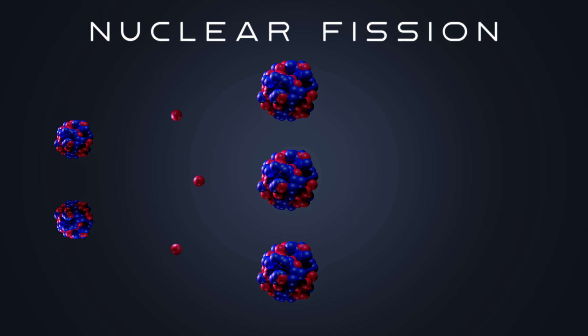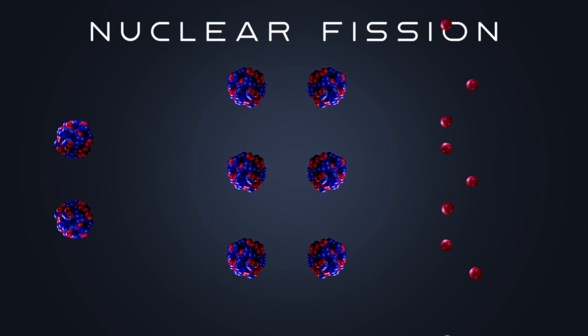These neutrons again strike the other plutonium atoms. These atoms again get split, and neutrons are released. This chain reaction continues, releasing huge amount of energy.